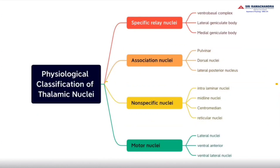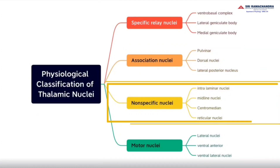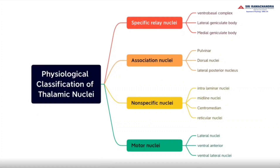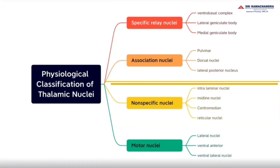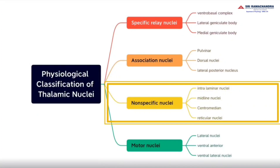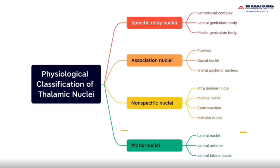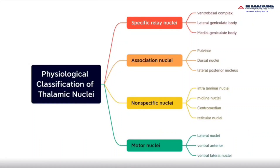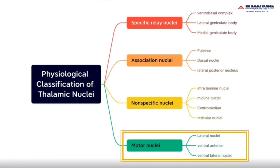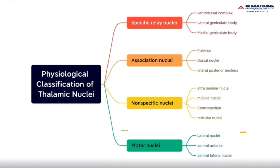Nonspecific nuclei consist of the intralaminar, midline, centromedian, and reticular nuclei. And finally, the motor nuclei consist of the lateral ventral anterior and the ventral lateral nuclei.